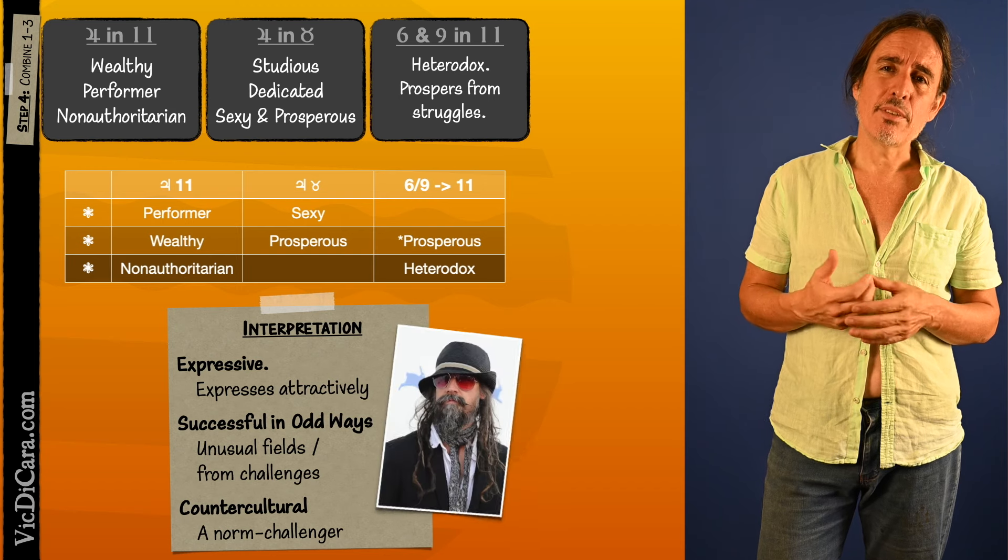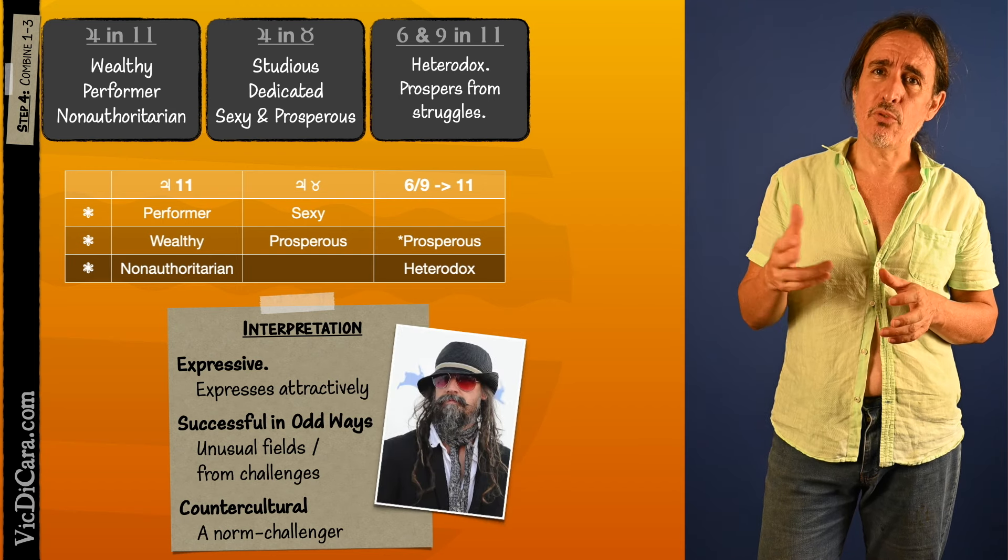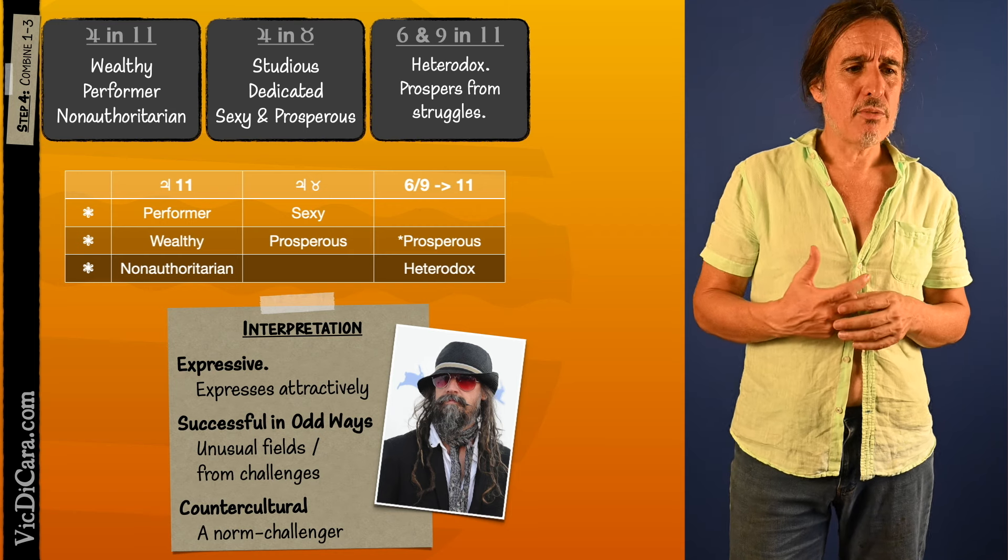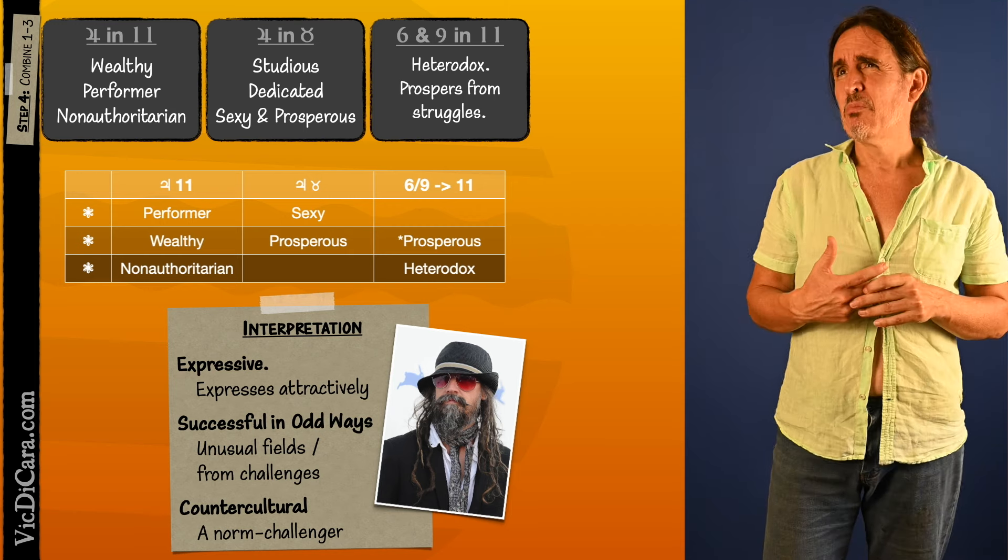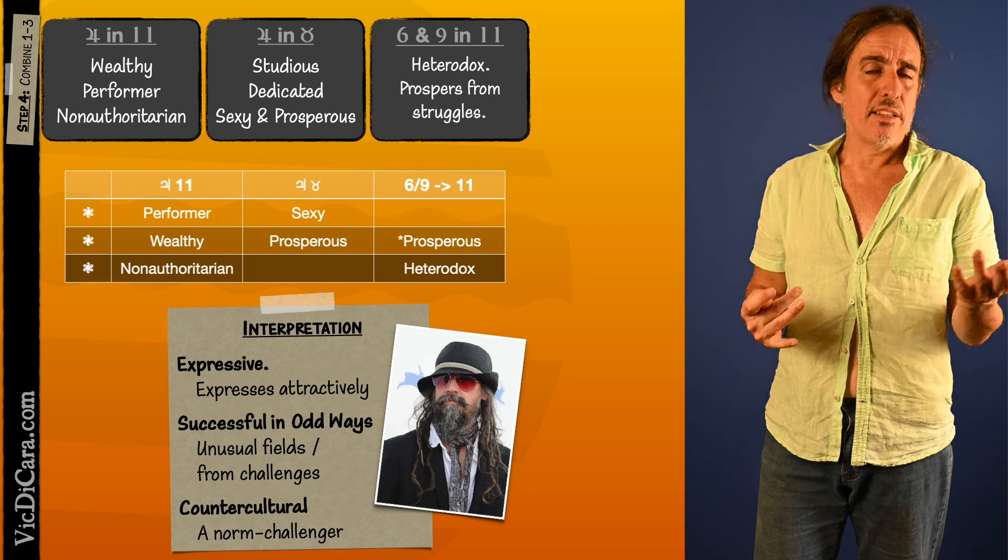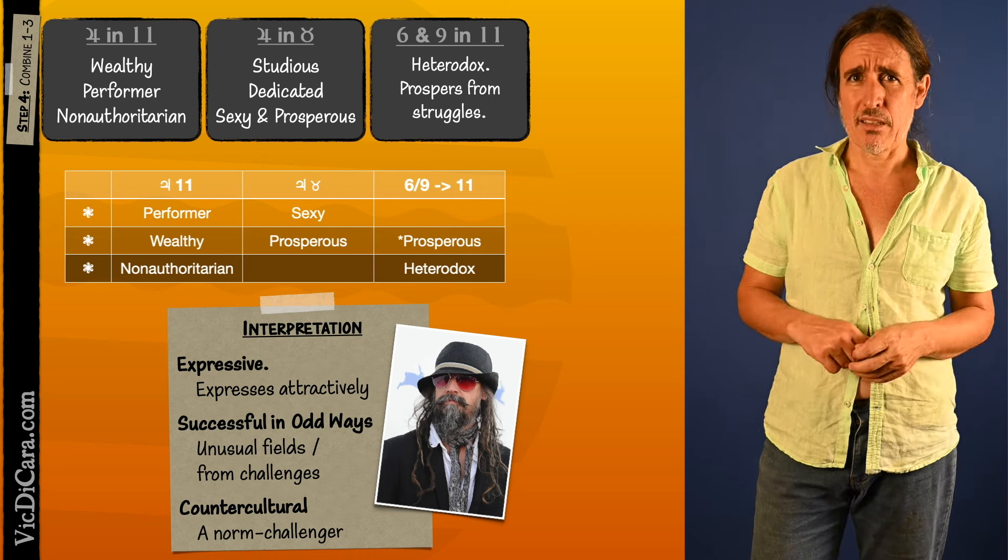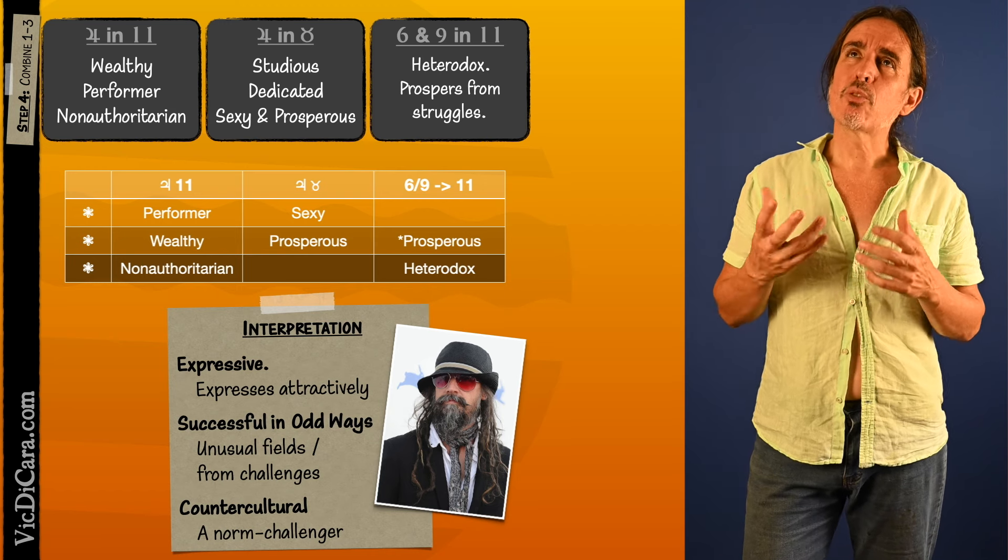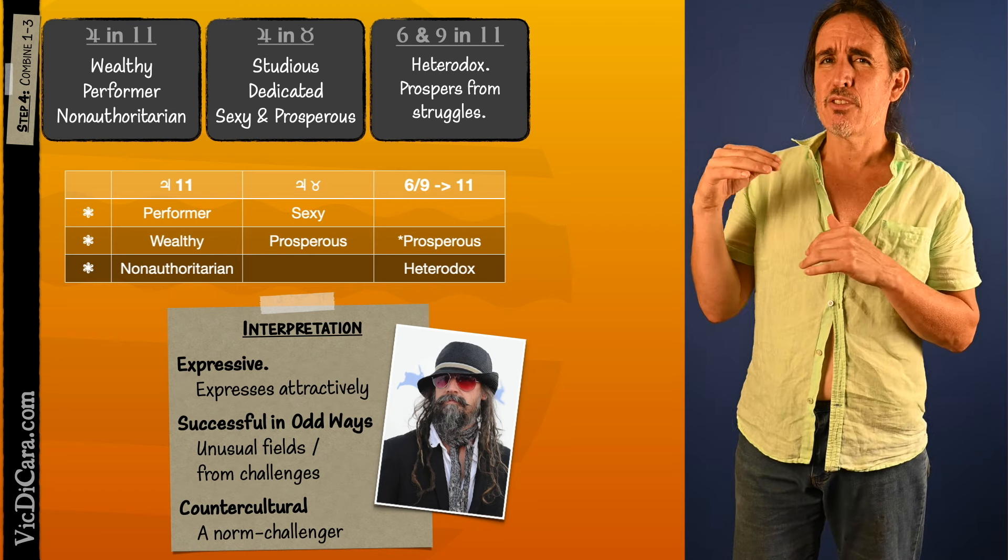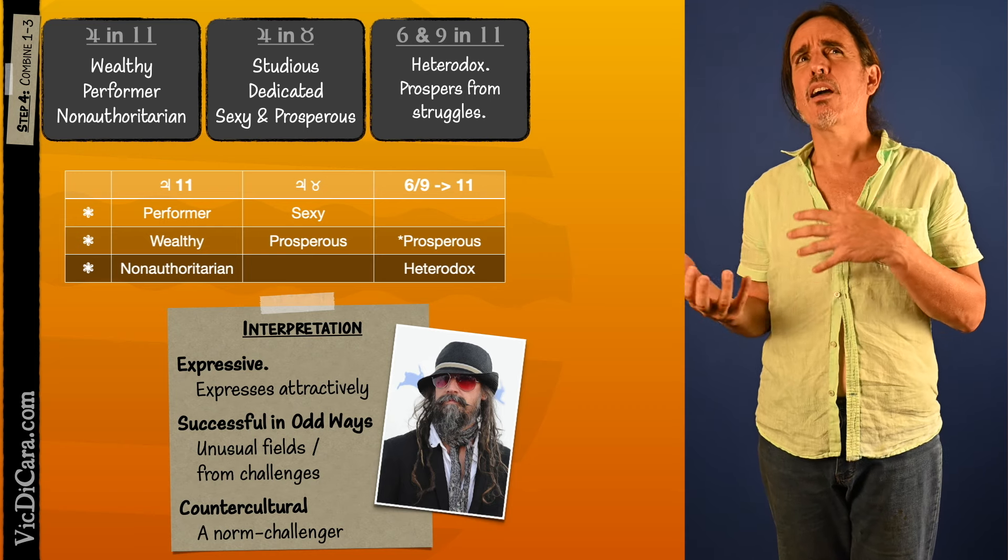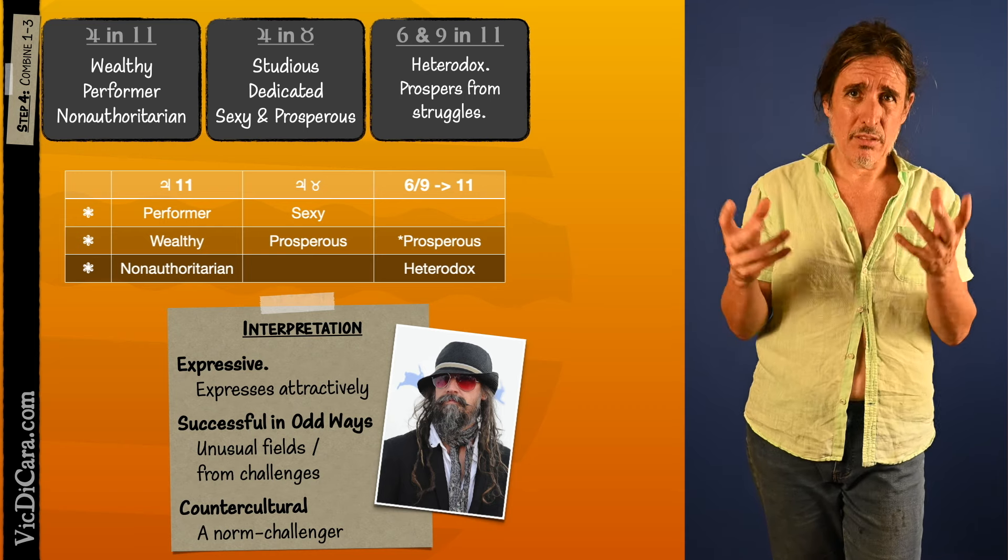So Rob Zombie is somebody who has Jupiter in Taurus in the 11th house. Now you can see kind of what I'm talking about where people like to hear this guy sing, people will probably want to listen to anything that he says. And you can also see how he's sort of profiting from the challenges. Like, he's making ugly sounds, technically.